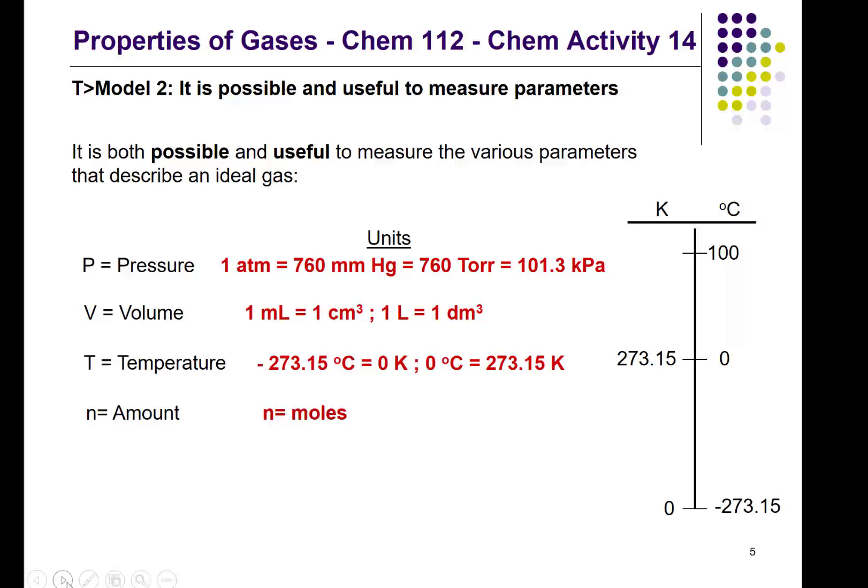If we go up another 100 degrees Celsius, well then we go up 100 units in the Kelvin scale. So 100 degrees Celsius, of course the boiling point of water under one atmosphere pressure, is equal to 373.15 Kelvin.